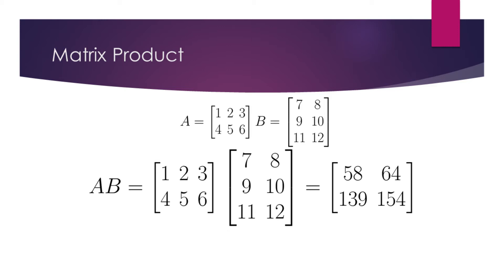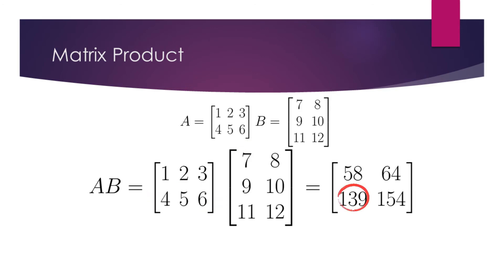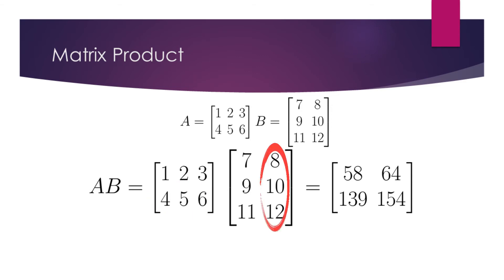Now let's obtain the dot product of the second row of A and the first column of B. The answer is 139. We write it in the second row of the first column. Finally, the dot product of the second row of A and the second column of B is 154. We write this in the second row of the second column of the resulting matrix.